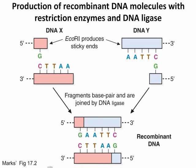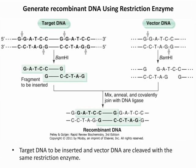The target DNA to be inserted into the vector is cleaved with the same restriction enzyme. You don't need to remember all enzymes — only ECO-R1, which produces sticky ends, and SMA1, which produces blunt ends.